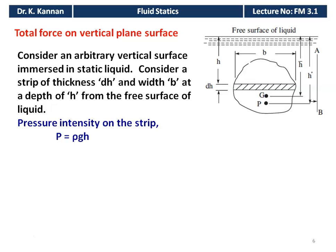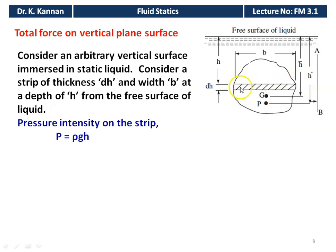Next, we take the vertical surface — the surface is perpendicular to the free surface of the liquid. Here, b is the width of the elemental strip of thickness dh, h is the height, and G and P are the center of gravity and center of pressure respectively. The center of gravity is at distance h-bar and the center of pressure is at distance h* from the free surface. We consider an elemental strip of thickness dh at height h with width b.